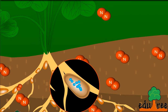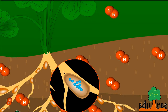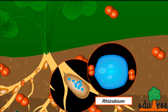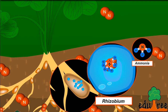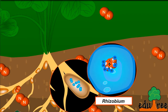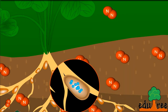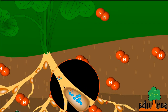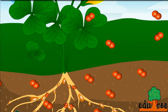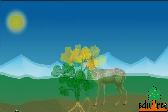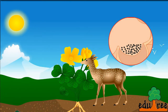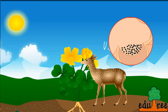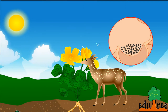Some blue-green algae present in the soil can fix atmospheric nitrogen into their protoplasm. These organisms convert atmospheric nitrogen into ammonia. After converting nitrogen into other organic substances, plants utilize them for their growth.